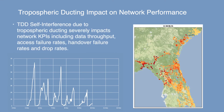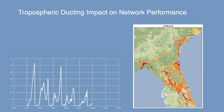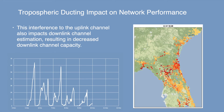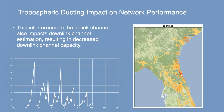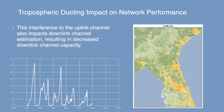TDD self-interference due to tropospheric ducting severely impacts network KPIs, often causing impacted cells to lose half of their capacity. The portion of the uplink channel most impacted is used for uplink channel sounding purposes. Sounding reference signals are used to estimate downlink channel conditions based on channel reciprocity of TDD systems. Even though it is the uplink channel that experiences interference during ducting, the base station applies a lower SINR estimate to the downlink channel. A less optimal modulation and coding scheme is then used, resulting in lower spectral efficiency and decreased downlink channel capacity.